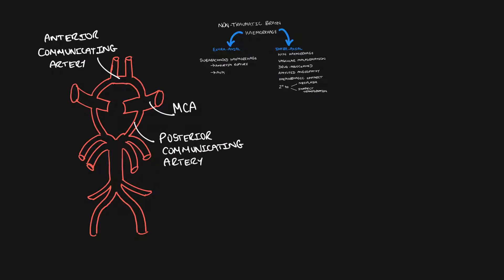Let's take a closer look at subarachnoid haemorrhages. This is a diagram of the circle of Willis. The most common aneurysms occur at the anterior communicating artery, at the middle cerebral artery, and the posterior communicating artery.